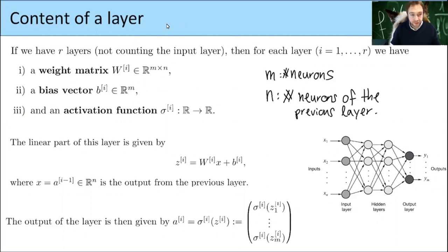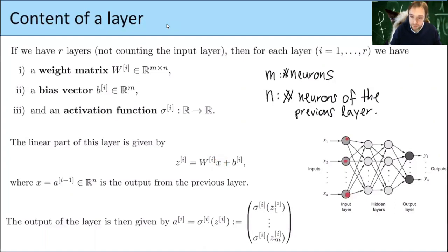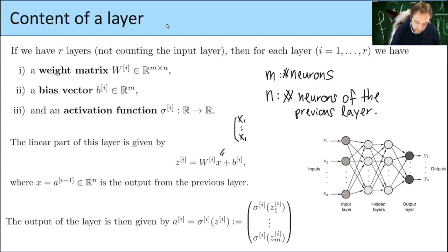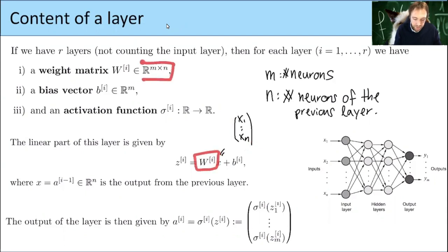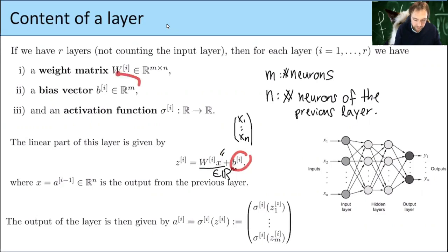For each layer we have an activation function. We introduce the so-called linear part of a neuron, which is calculated by taking the values of the layer before. For example, in the input layer we have n values x1 up to xn as a vector. We multiply this vector by the weight matrix — which we can do because it is an m-by-n matrix — and then add the bias vector of size m. The result is the linear part, usually denoted Z, and we use square bracket notation to indicate which layer we are in.